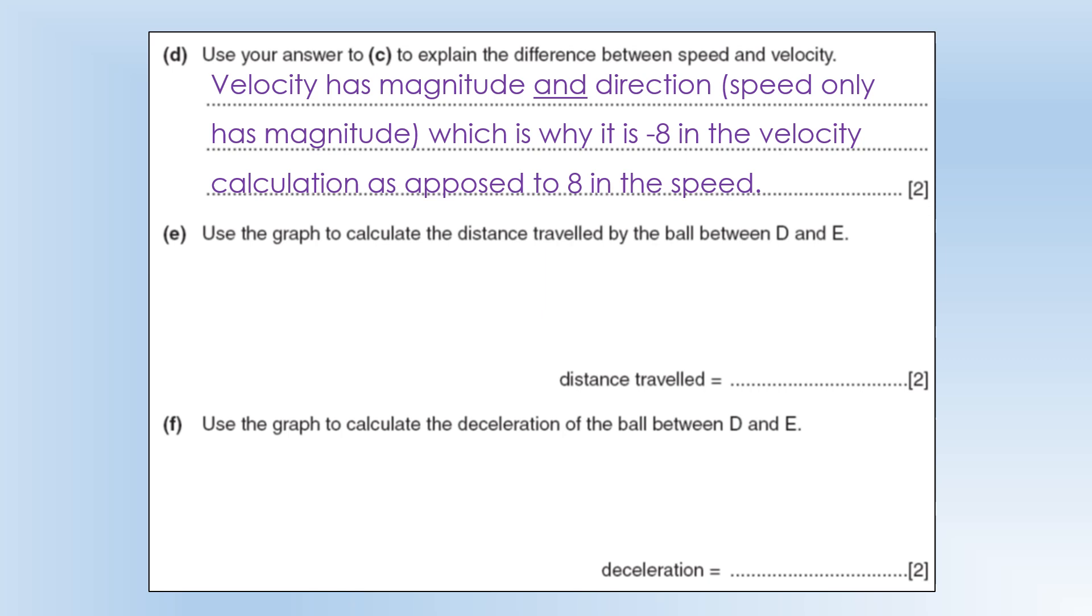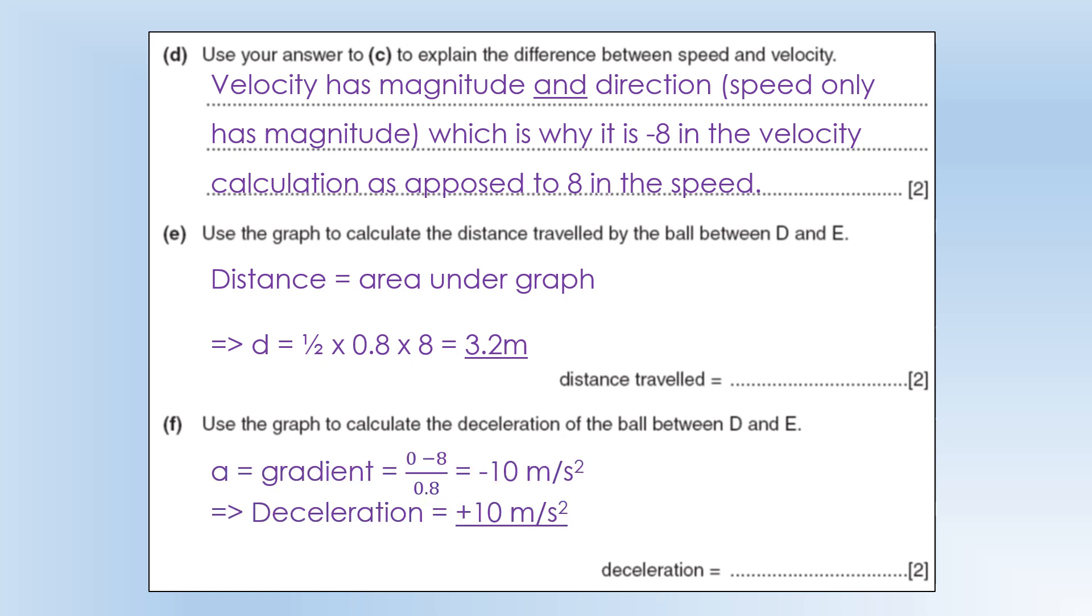Use the graph to calculate the distance traveled by the ball between D and E. To get distance we need the area under the graph. The area is a triangle so we do half base times height. Use the graph to calculate the deceleration between D and E. We need to find the gradient of our graph, which is the acceleration. The acceleration finishes at 0, starts at 8. The acceleration is minus 10 and therefore the deceleration is plus 10 because deceleration means the speed is decreasing.